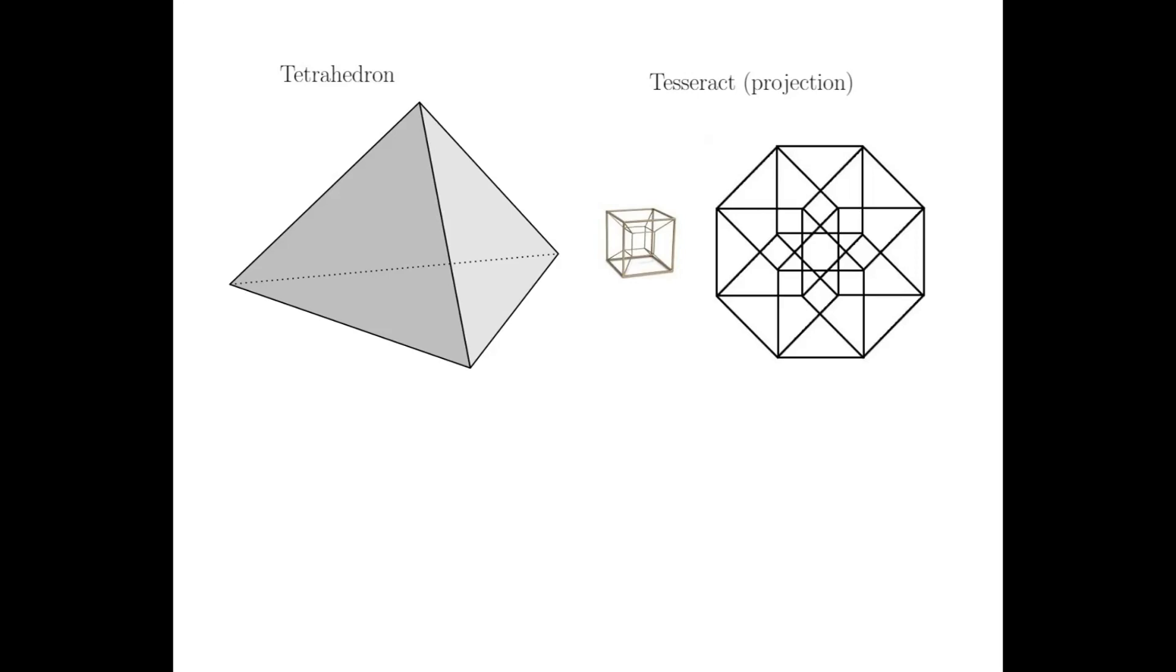For example, a three-dimensional tetrahedron or triangular pyramid shown here has sides that are two-dimensional triangles. A four-dimensional hypercube, or tesseract, has sides that are three-dimensional cubes. The higher the dimension of the object, the higher the dimension of the sides, which create restrictions on how they can fit together without overlapping.